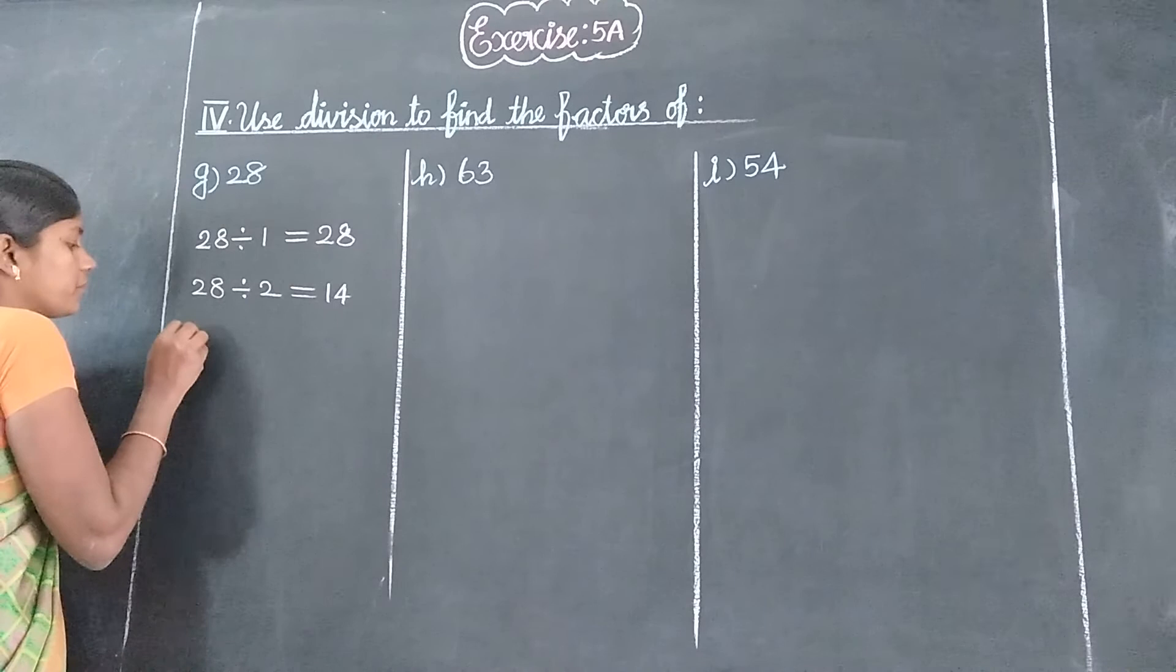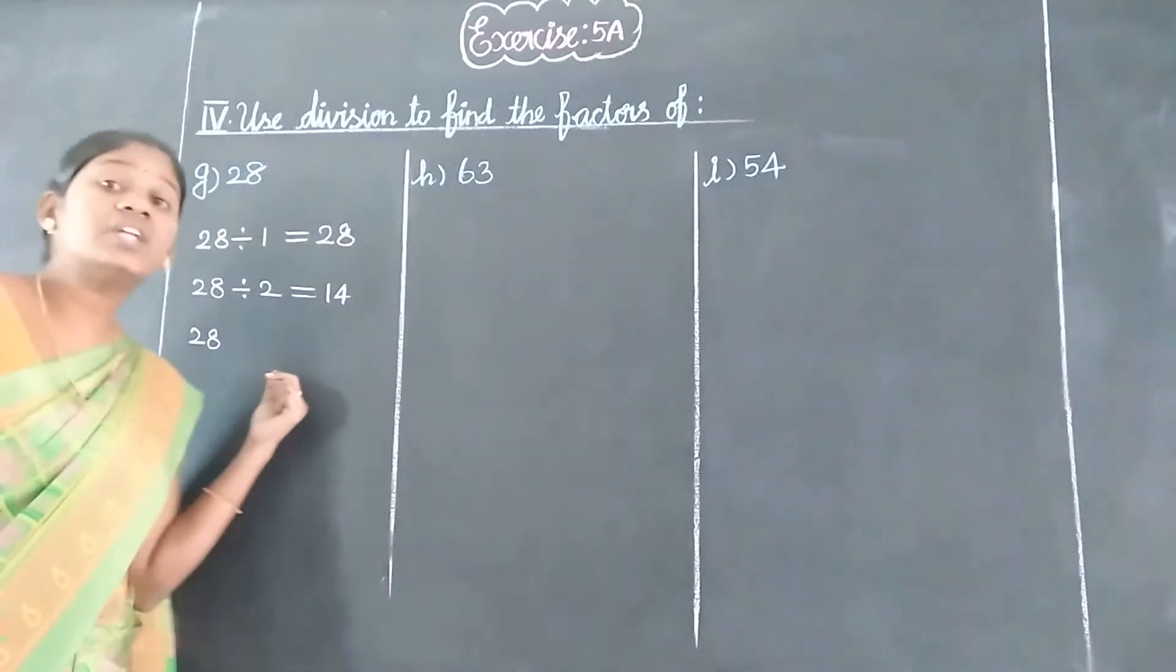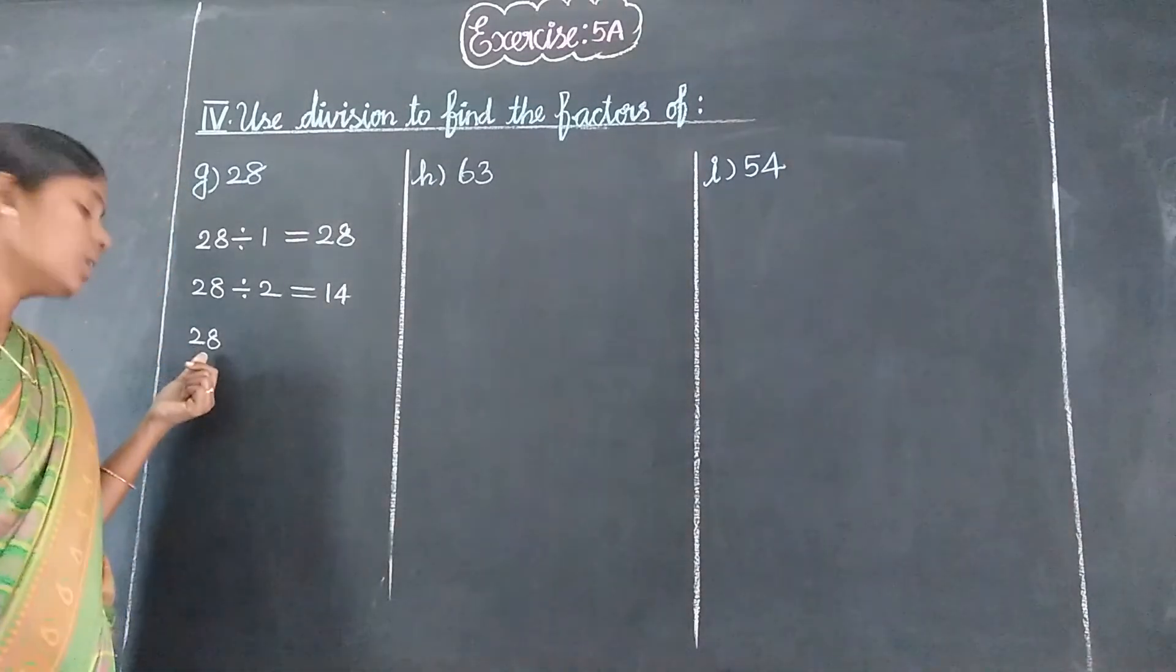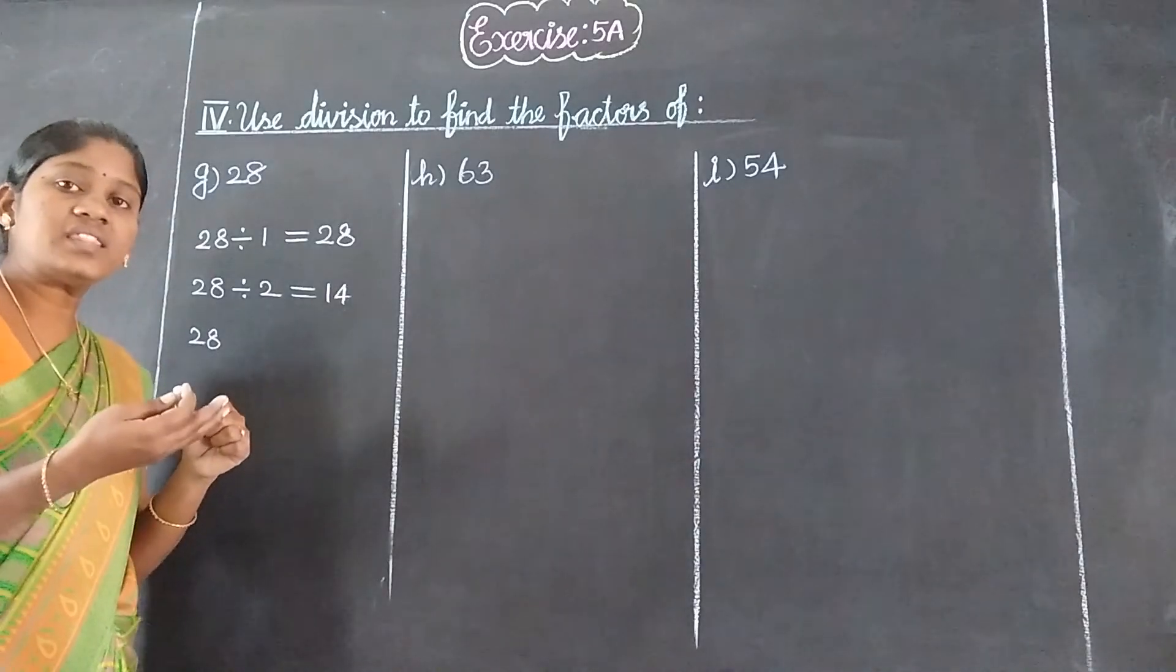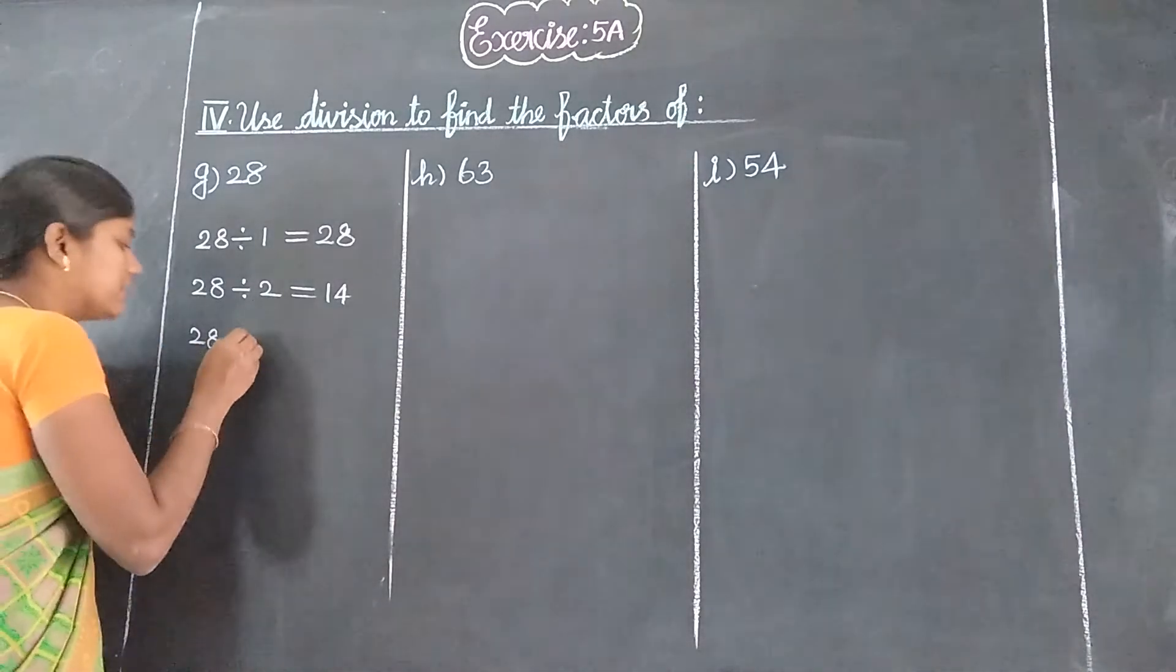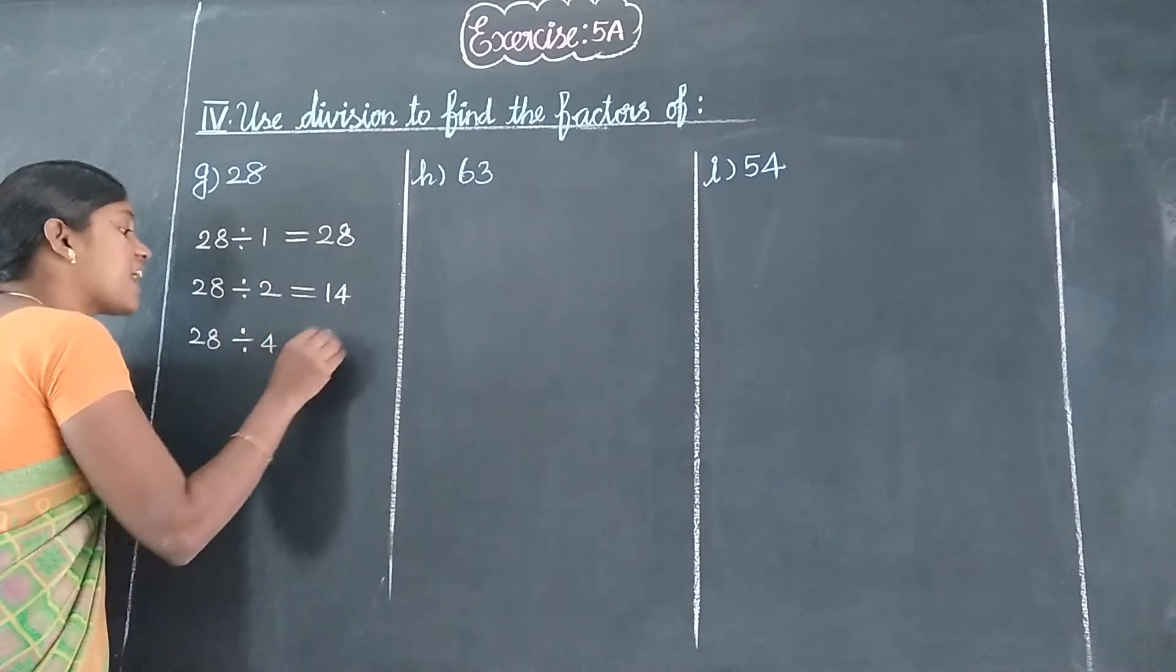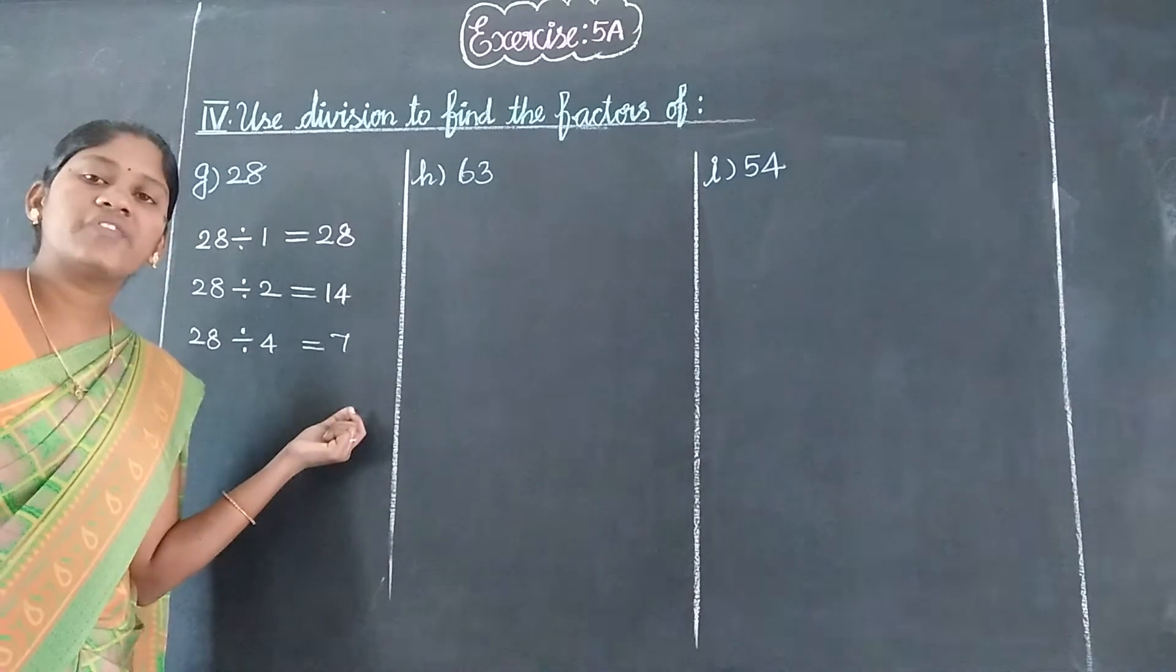Next, 28 divided by 3. Does 3 go into 28? No, because 9 threes are 27, 10 threes are 30. So 28 is not divisible by 3. Next, 4 table. Yes. How many 4s are 28? Seven 4s are 28.